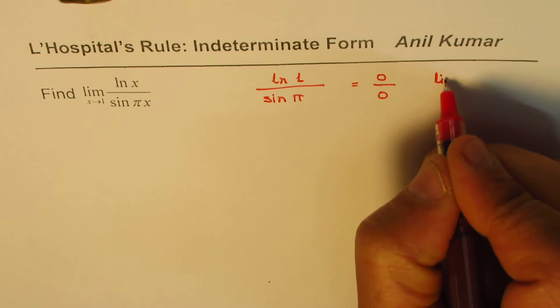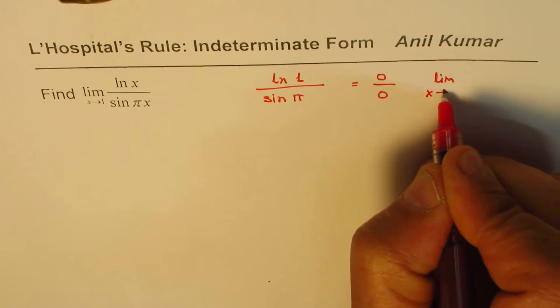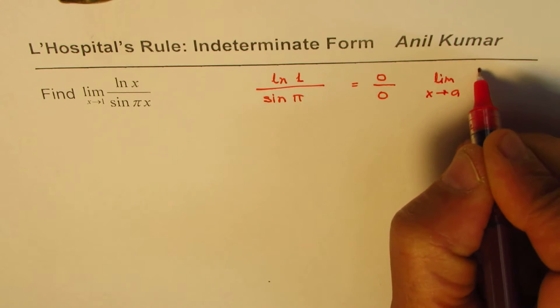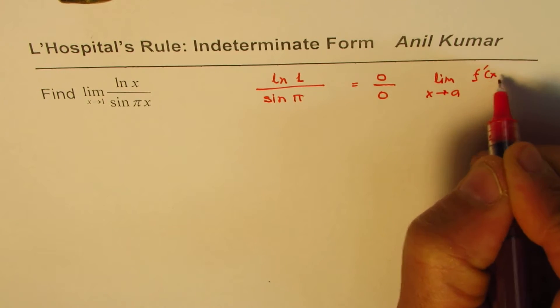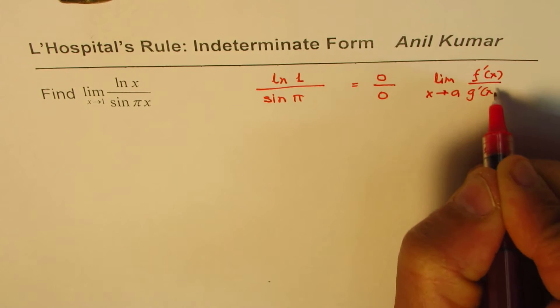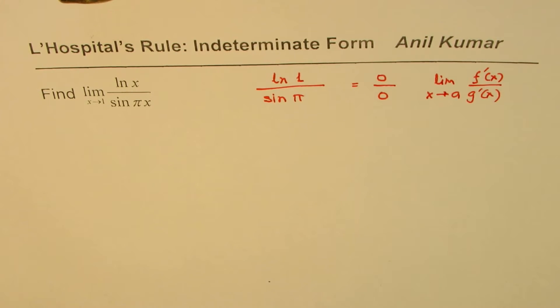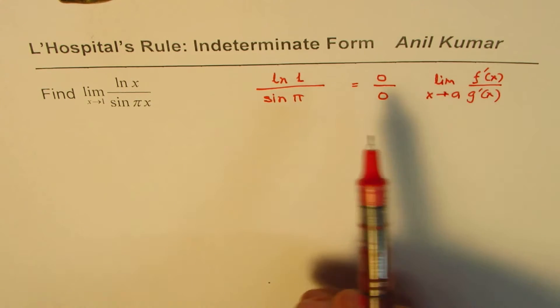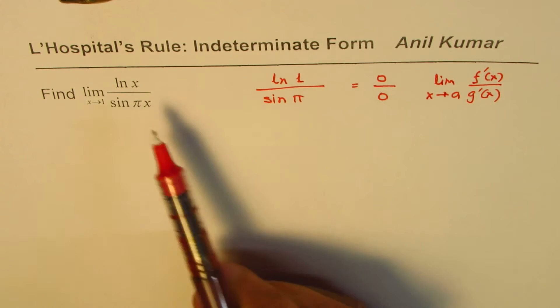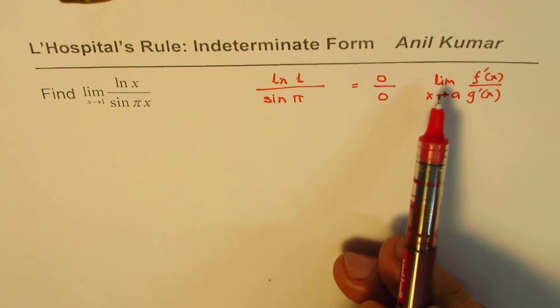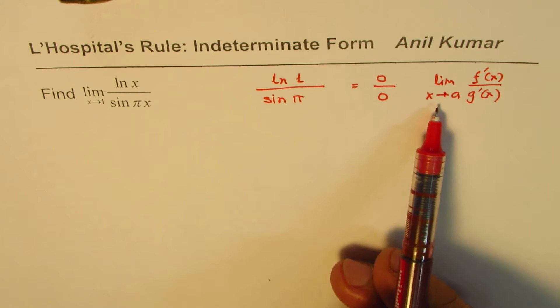Therefore, we know in such cases the limit of the function as x approaches a will be the same as the ratio of their derivatives. So the limit of the quotient of functions will be the same as the limit of the quotient of